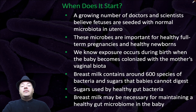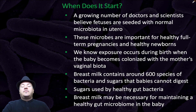A growing number of doctors and scientists believe fetuses are seeded with normal microbiota in utero. These microbes are important for healthy full-term pregnancies and healthy newborns. We know exposure occurs during birth when the baby becomes colonized with the mother's vaginal biota. Breast milk contains around 600 species of bacteria and sugars the baby cannot digest — sugars which are used by healthy gut bacteria. Breast milk may be necessary for maintaining a healthy gut microbiome in the baby.